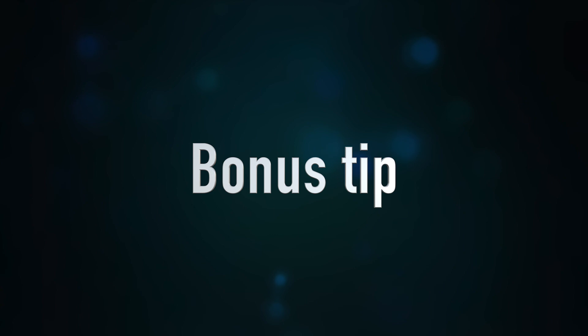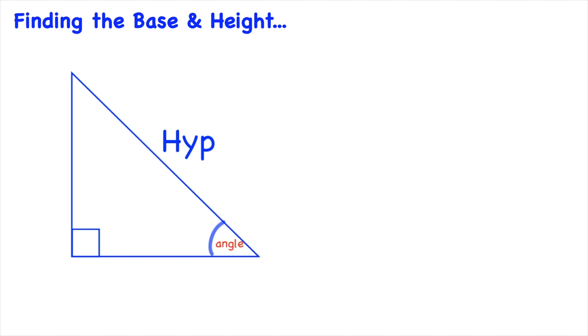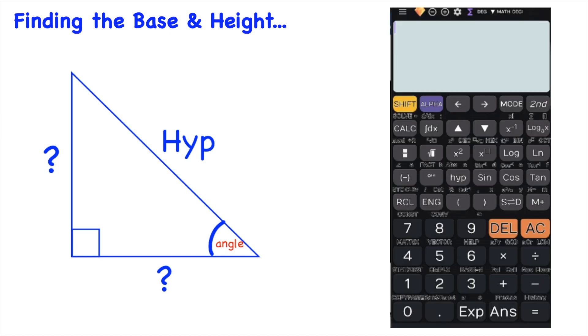Now here's a little bonus tip that you can do. Say you're given a question where this time you're only given by hypotenuse and the angle and you want to find the length of the other two sides. You follow a similar process but instead of pressing the plus button you press the minus button instead.